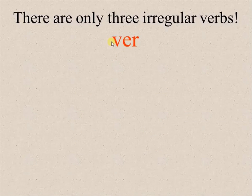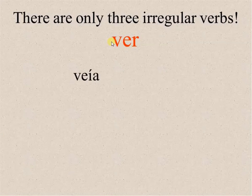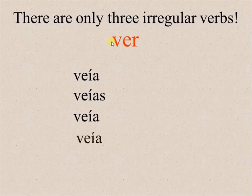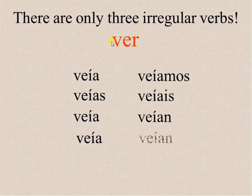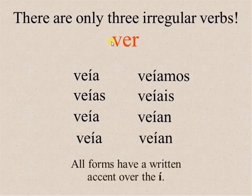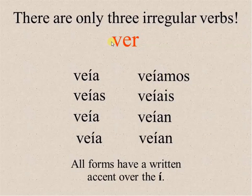The last irregular verb in the imperfect is the verb ver, to see: yo veía, tú veías, él o ella veía, usted veía, nosotros veíamos, vosotros veíais, ellos/ellas veían, ustedes veían. All forms have a written accent mark over the I.